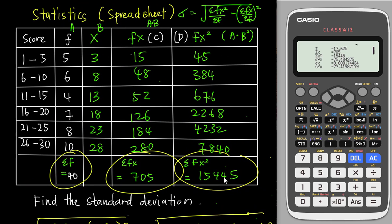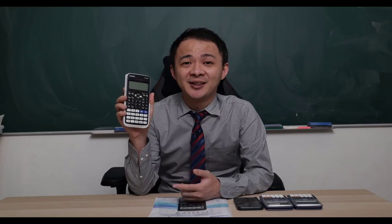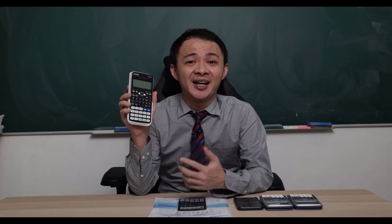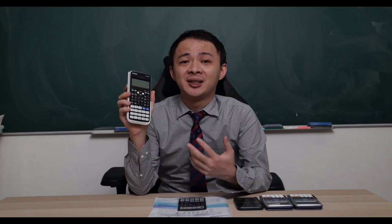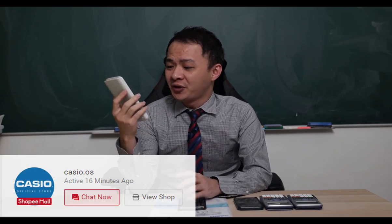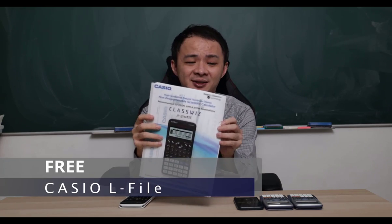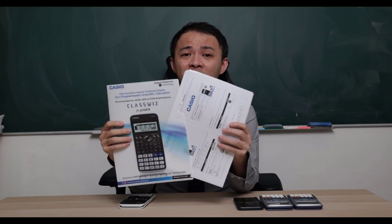I hope you find the spreadsheet function useful. The purpose of using it is so you can get all the intermediate numbers clearly and correctly. Anyway, I hope you learned something from this video. If you're interested in getting this calculator, I'll share a Shopee link in the description below, which brings you to the Casio official store. Right now Casio Malaysia is doing a promotion — whoever buys from their official store will receive a free Casio L-file.